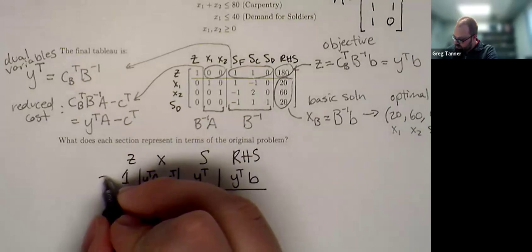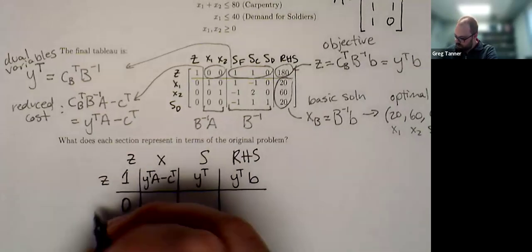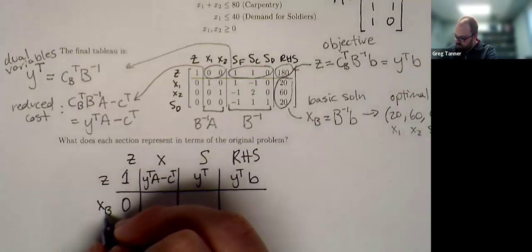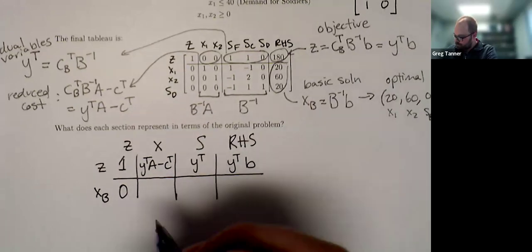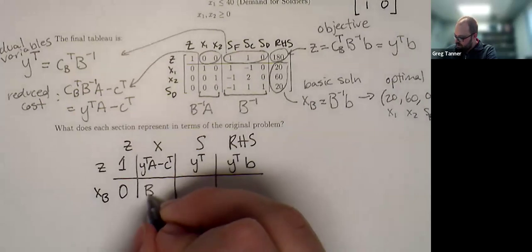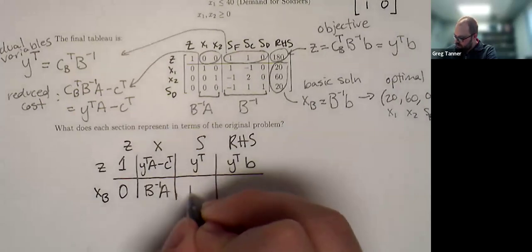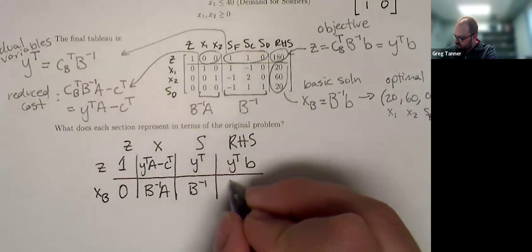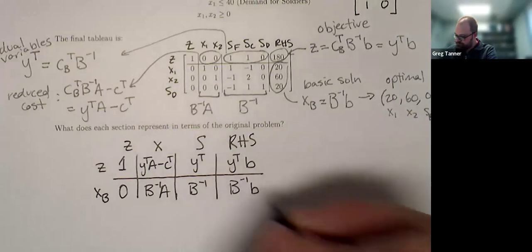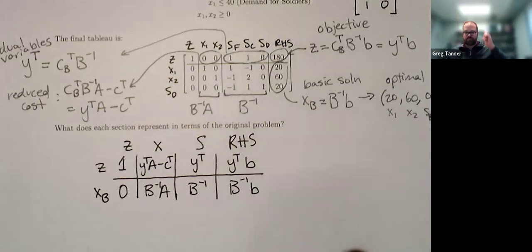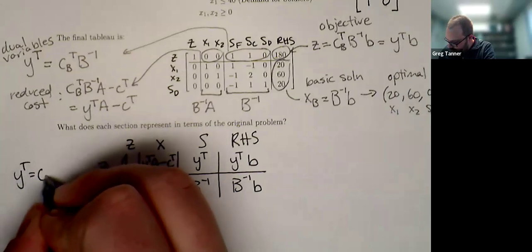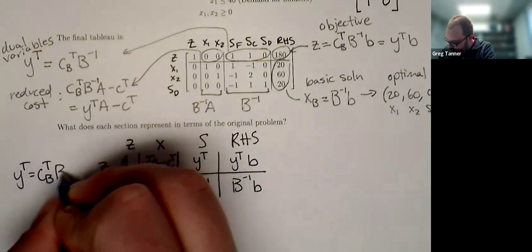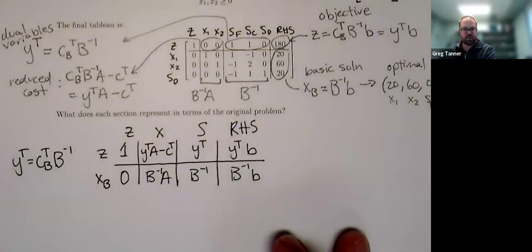So this first row always corresponds to Z. The rest of the rows correspond to the current basis, which we'll denote XB. Here we'll have B inverse A, B inverse, and B inverse B. And then maybe the only thing I need to note off to the side here is that Y transpose equals CB transpose B inverse.